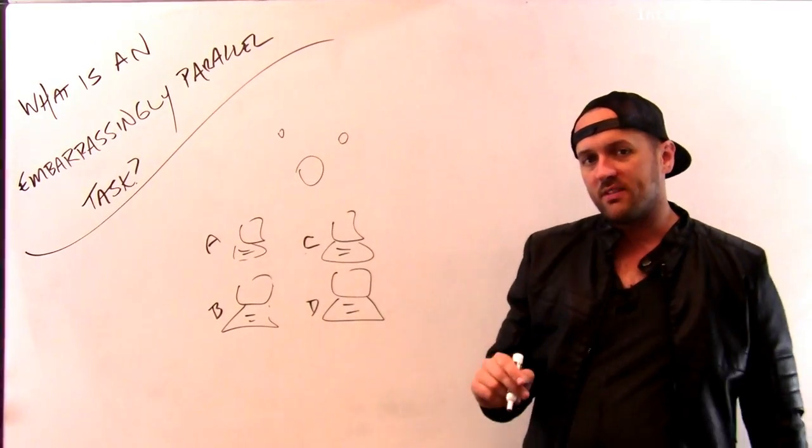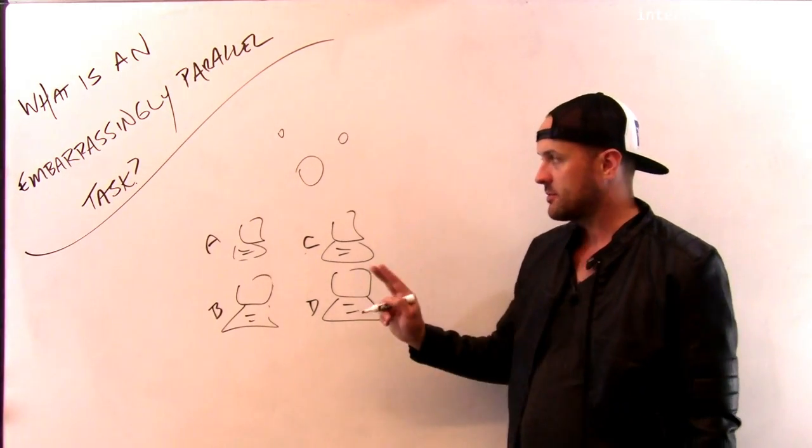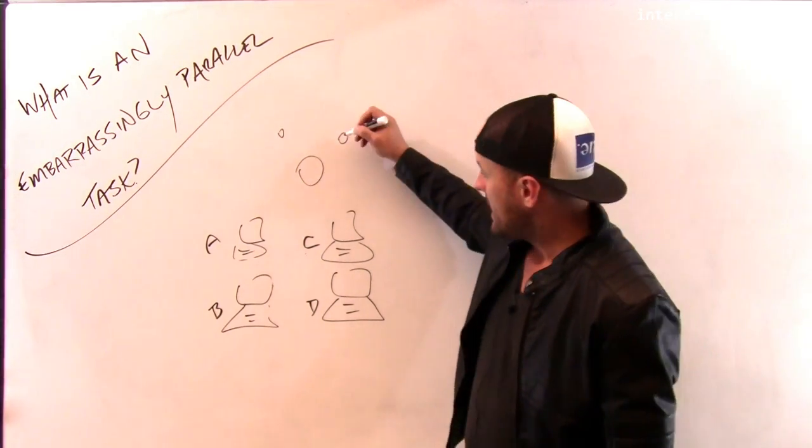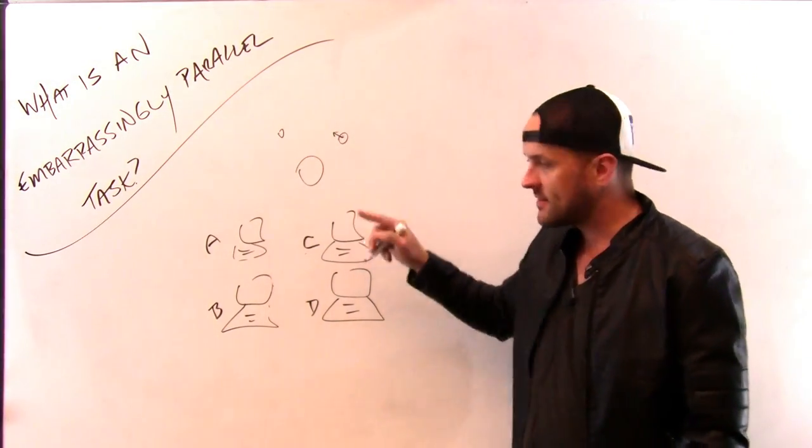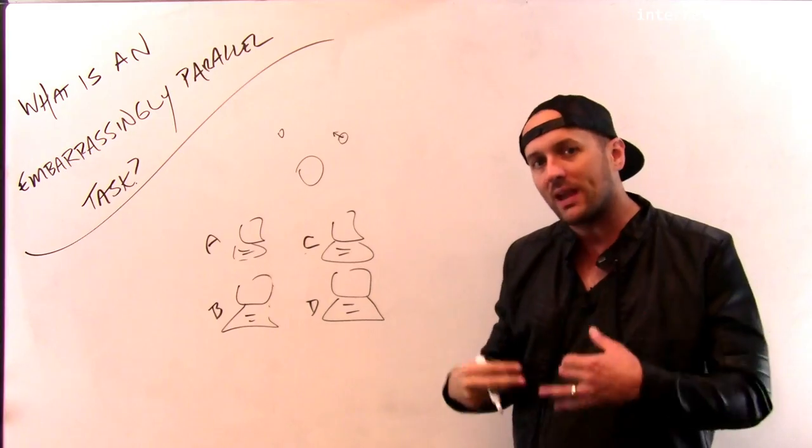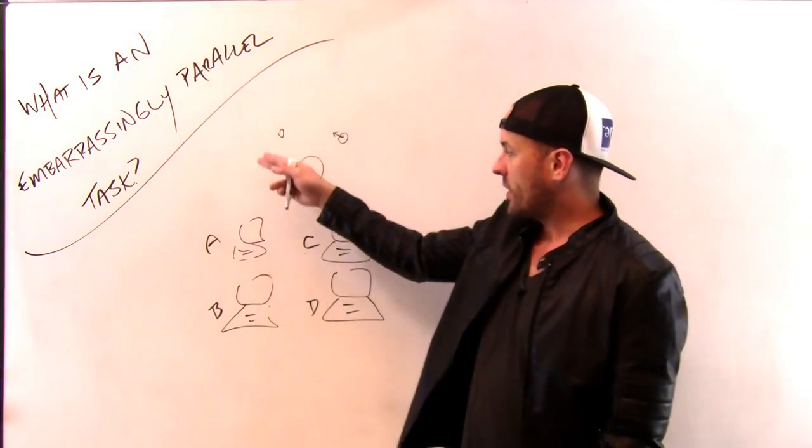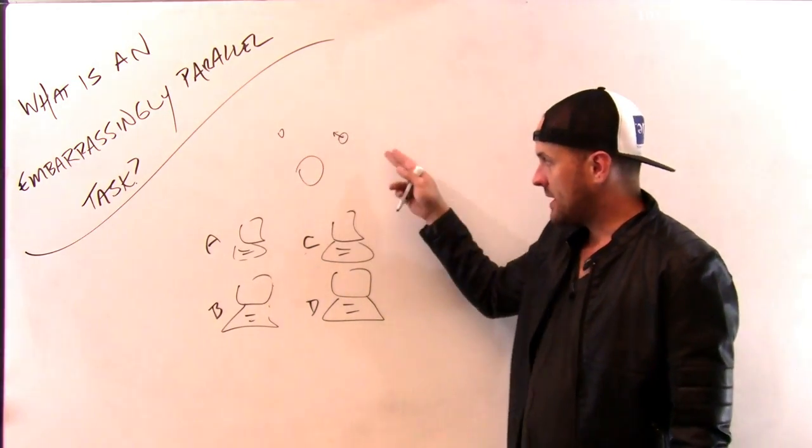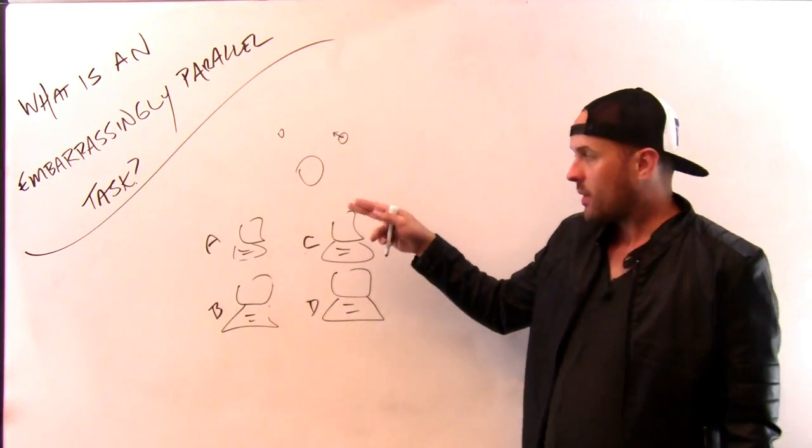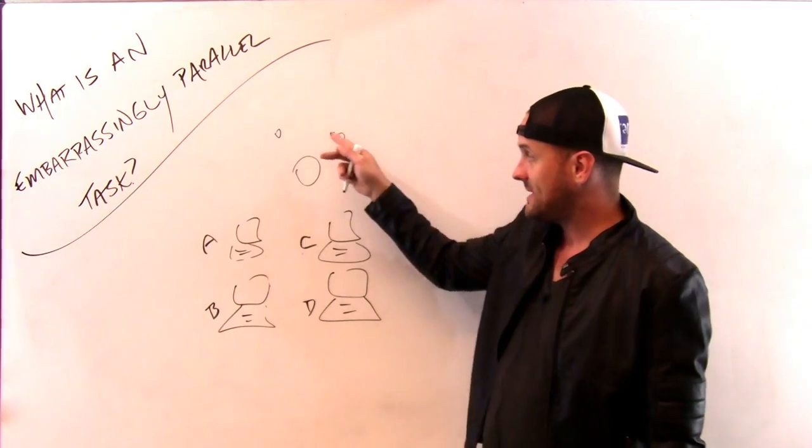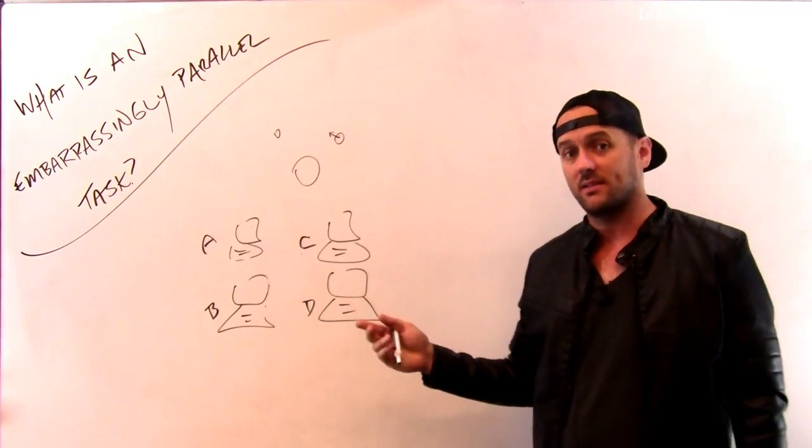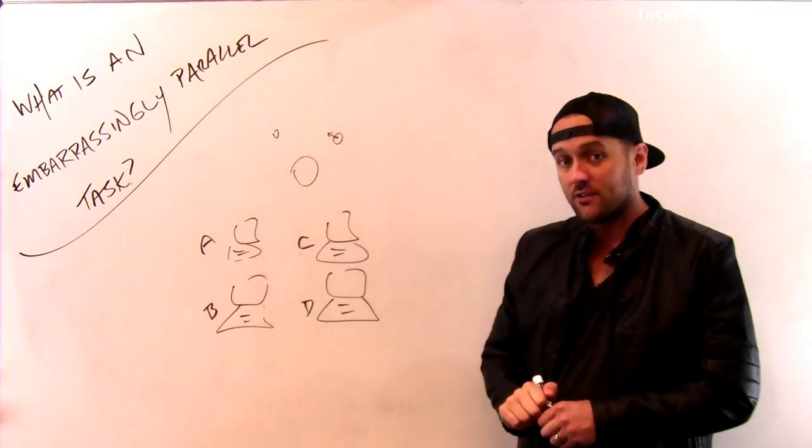The three-body problem is something that is very, very hard to split up across multiple machines. Because here's the problem: every time one of these guys moves, the other two bodies need to know where it is so they can make their own calculations. And so the process of determining how these things will move requires all this communication between the computers that would be maintaining the positions of each one of these objects. And so this is something that is very, very slow to split up.